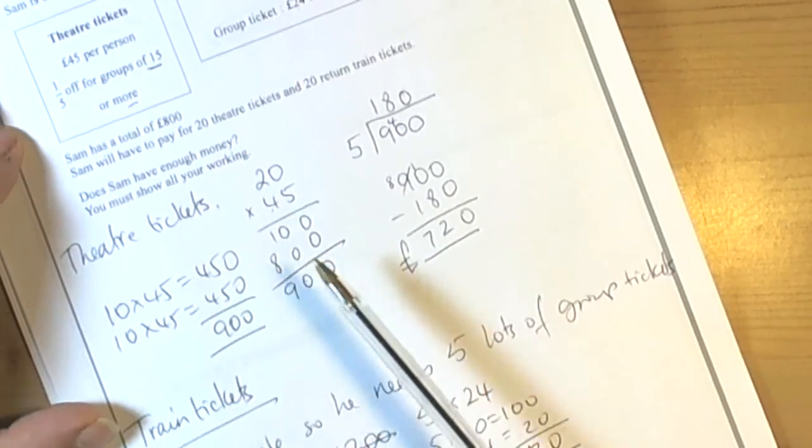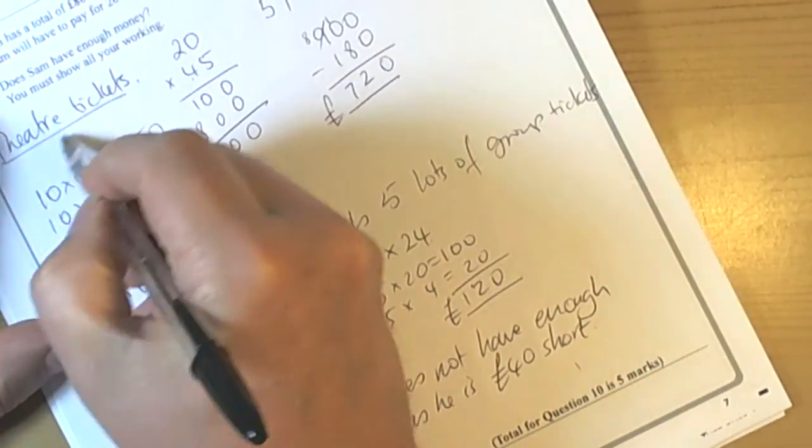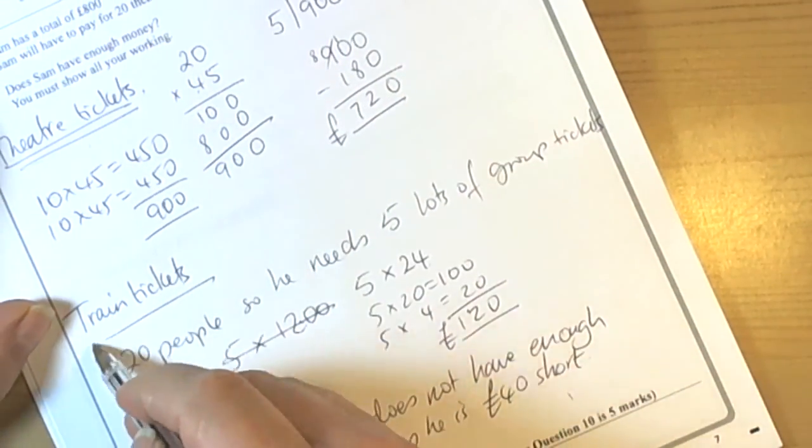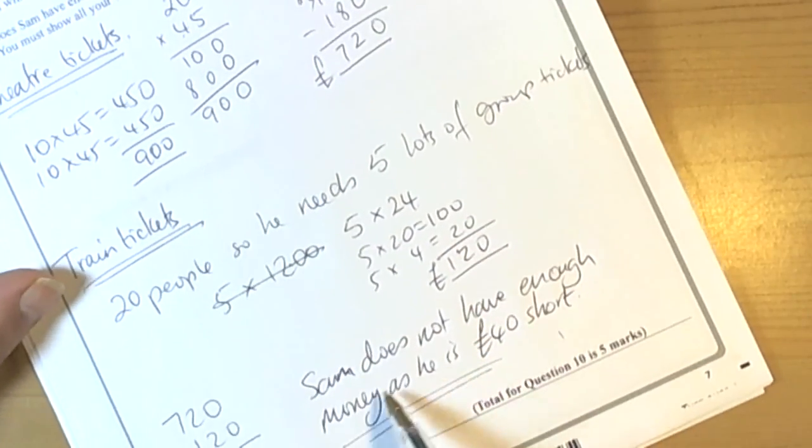But again, start question, key things are: identify key information, write it out in a logical way, so work out one bit first, do the sums, work out the next bit, do the sums, and then do a final sentence answer to get the full marks.